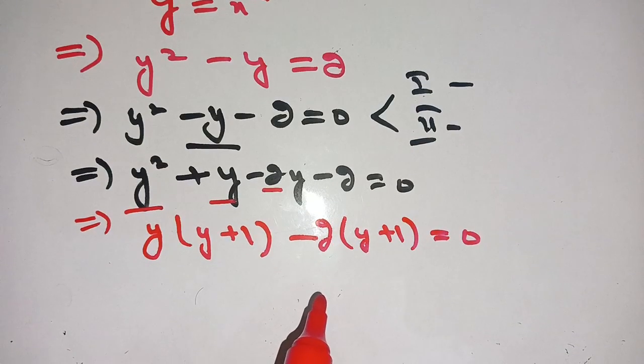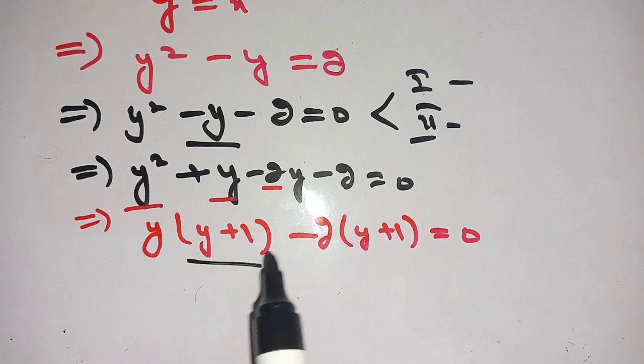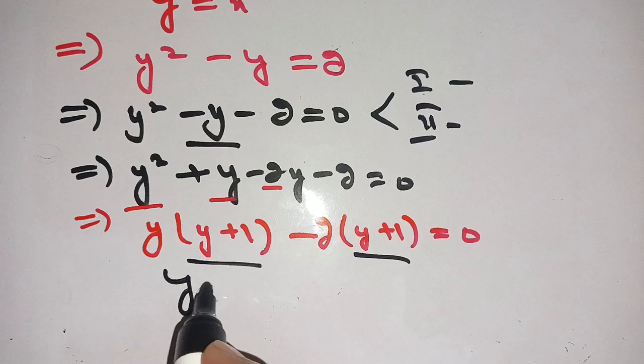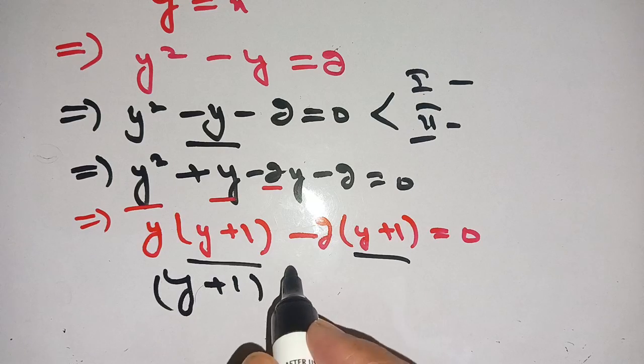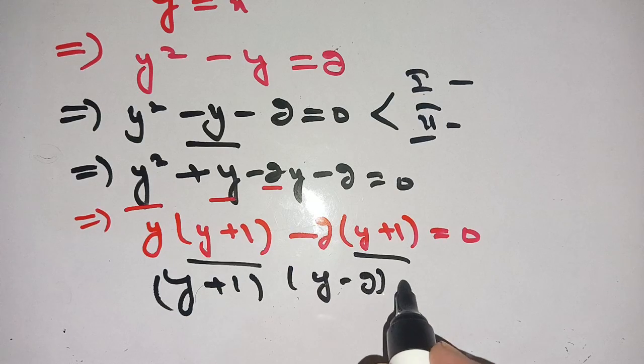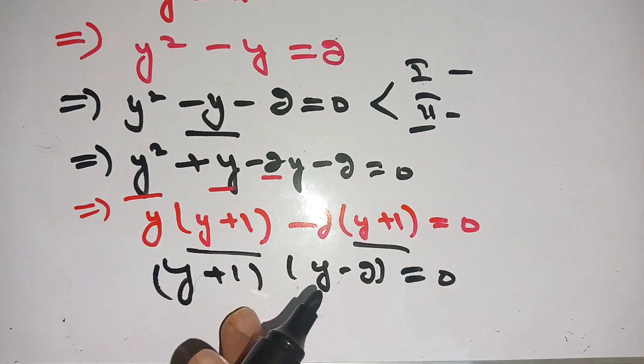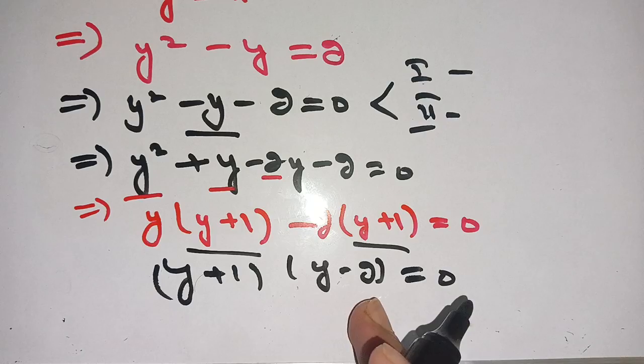On the next step, you see that y plus 1 from this term and from this term can be taken out. We get y plus 1 times y minus 2 is equal to 0. Here are two terms, y plus 1 and y minus 2.